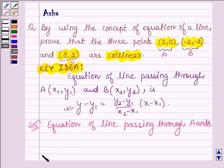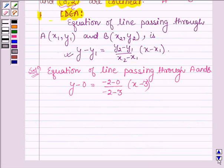So here we have y - y1 is 0, y2 - y1 so we have -2 - 0 upon -2 - 3 into x - x1 which is 3. The equation of line is